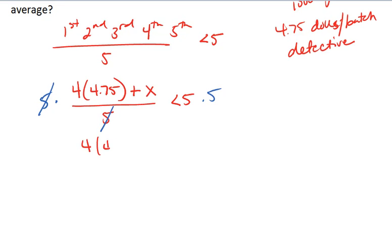We have 4 times 4.75 plus x is less than 25. We can do 4 times 4.75, which is 19, plus x is less than 25.